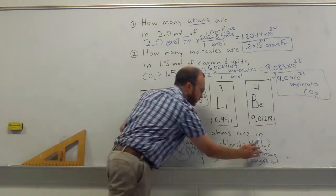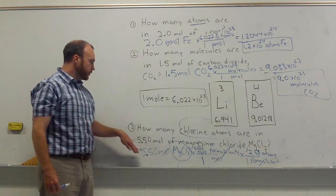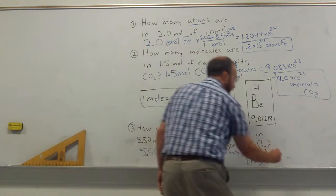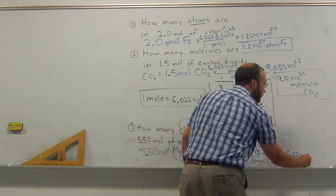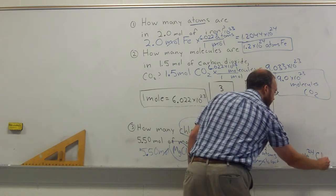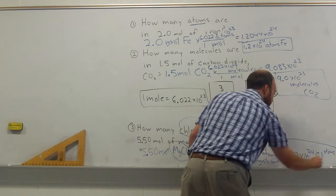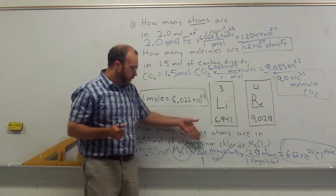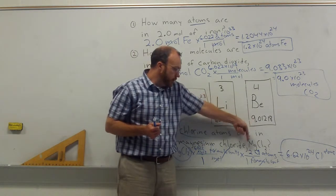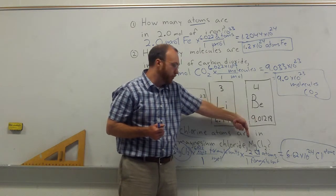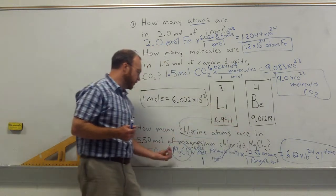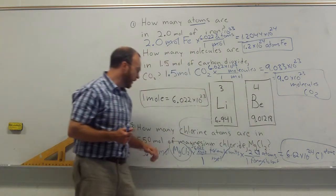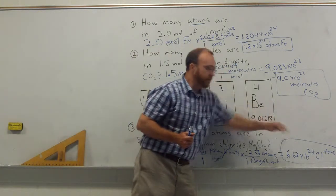By looking at the formula MgCl₂, we can see there are two chlorine atoms in one formula unit of magnesium chloride, so we add a second step. Moles cancel, formula units cancel, and we end up with chlorine atoms. Multiplying 5.50 times 6.022 times 10 to the 23rd times 2, we get 6.62 times 10 to the 24th chlorine atoms. This measurement had three significant figures; the count of two chlorine atoms is exact, so three is less than four — we round to three significant figures.